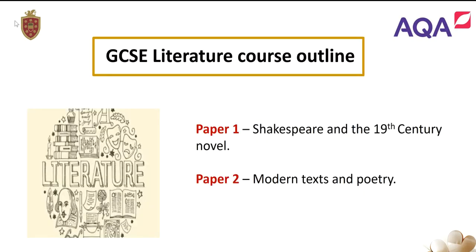The GCSE literature course outline: the GCSE literature course is made up of two papers. Paper 1 is Shakespeare and the 19th century novel, and Paper 2 is Modern Text and Poetry.